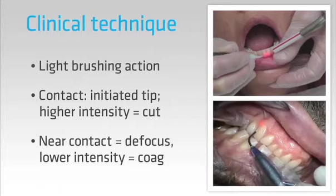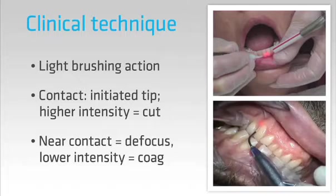When we want to coagulate we should be away from contact with the tissue so that the beam spreads out or defocuses. This lowers the intensity below the ablation threshold so we get localized heating and coagulation rather than ablation.